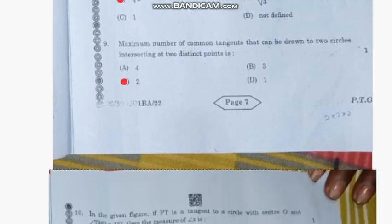Question number 9: The maximum number of common tangents that can be drawn to two circles intersecting at two distinct points is—the correct answer is option C, 2.